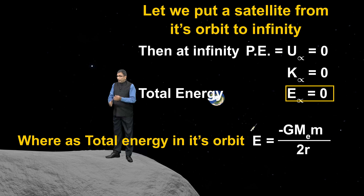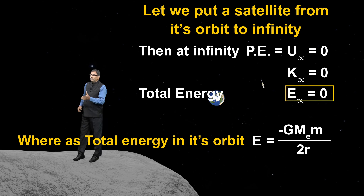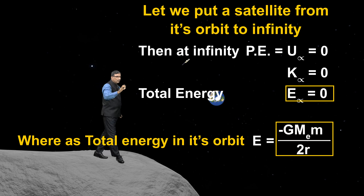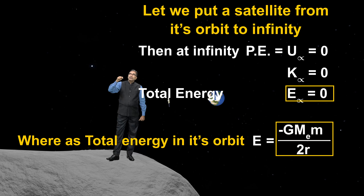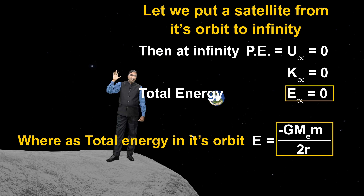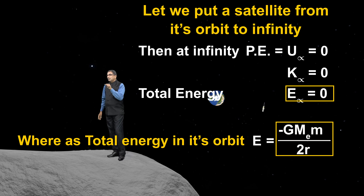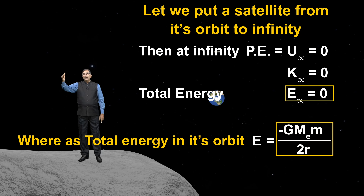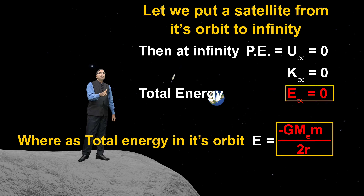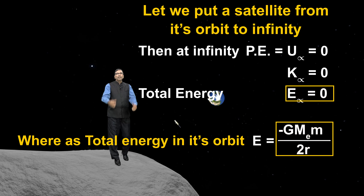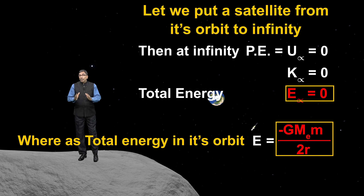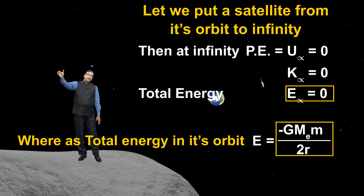When any satellite is in its orbit, its energy is known. When we want to take that same satellite to infinity, the energy there is also known — it is zero. So the satellite's energy when it is in its orbit is less compared to when it is at infinity. The orbit energy is negative (minus G Mₑ m upon 2r) and at infinity it is zero. Things less than zero are negative, and things greater than zero are positive.